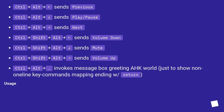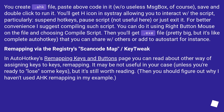Usage: You create an .ahk file, paste the above code in it (without the useless message box, of course), save and double-click to run it. You'll get an icon in the system tray allowing you to interact with the script — particularly, suspend hotkeys, pause script (not useful here), or just exit it.